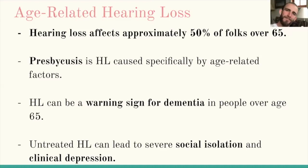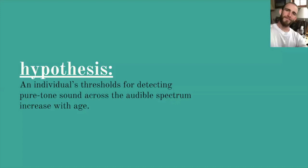There are specific considerations related to hearing loss in the aging population. When it's caused by factors specifically related to aging, hearing loss is known as presbycusis. Hearing loss affects about half of people over the age of 65 and can have serious repercussions. Studies have found hearing loss in individuals over 65 to be linked to the development of dementia, including Alzheimer's. Furthermore, untreated hearing loss can lead to severe social isolation and clinical depression. While it is well documented that hearing thresholds increase with age, it continues to be important to research these details. We hypothesize that an individual's thresholds for detecting pure tone sound across the audible spectrum increase with age — in other words, older people have more hearing loss.